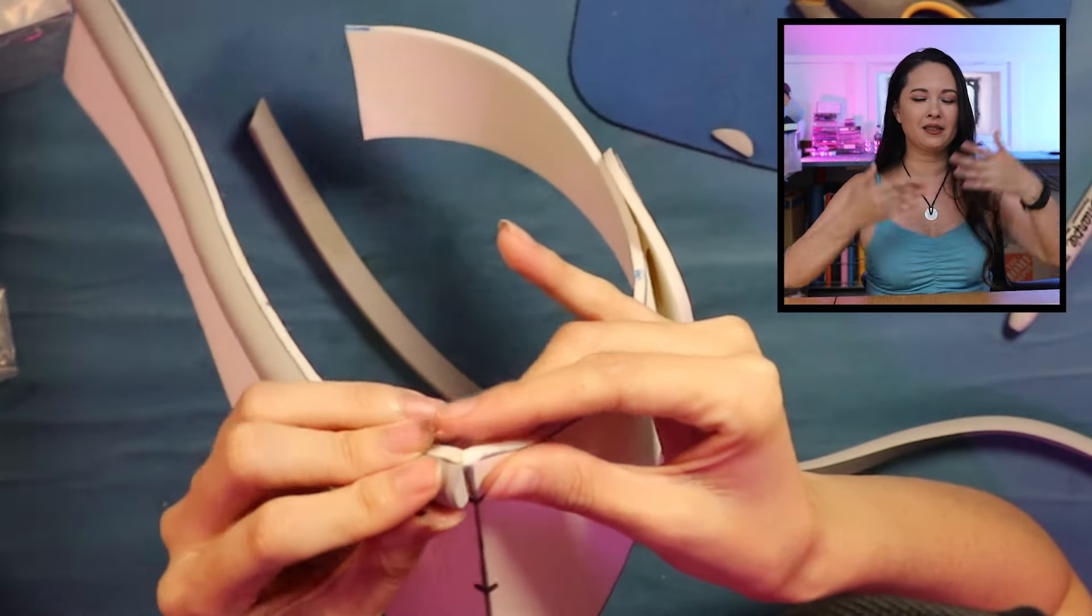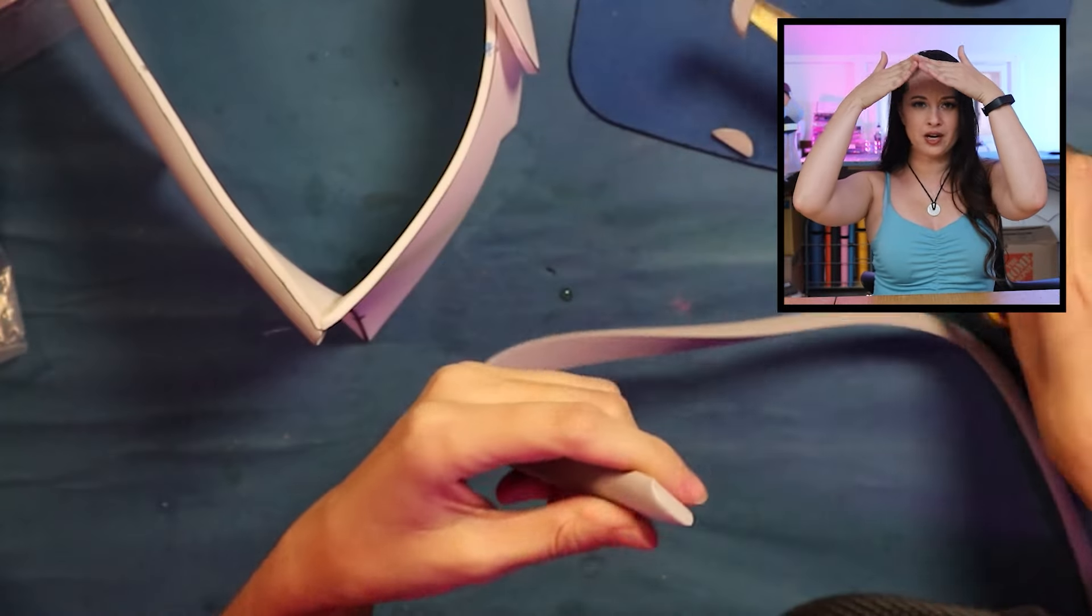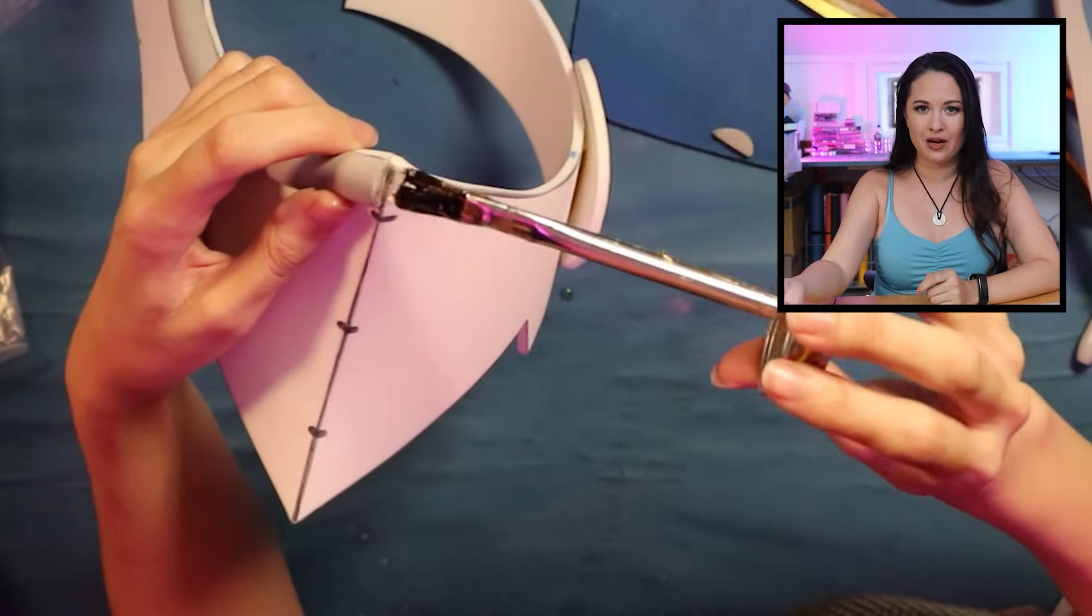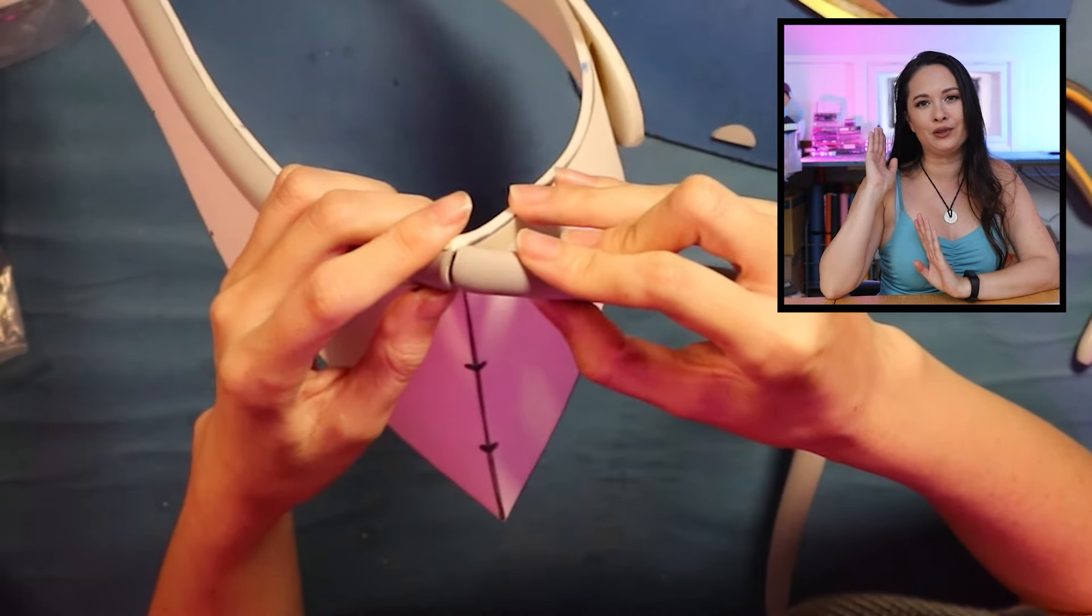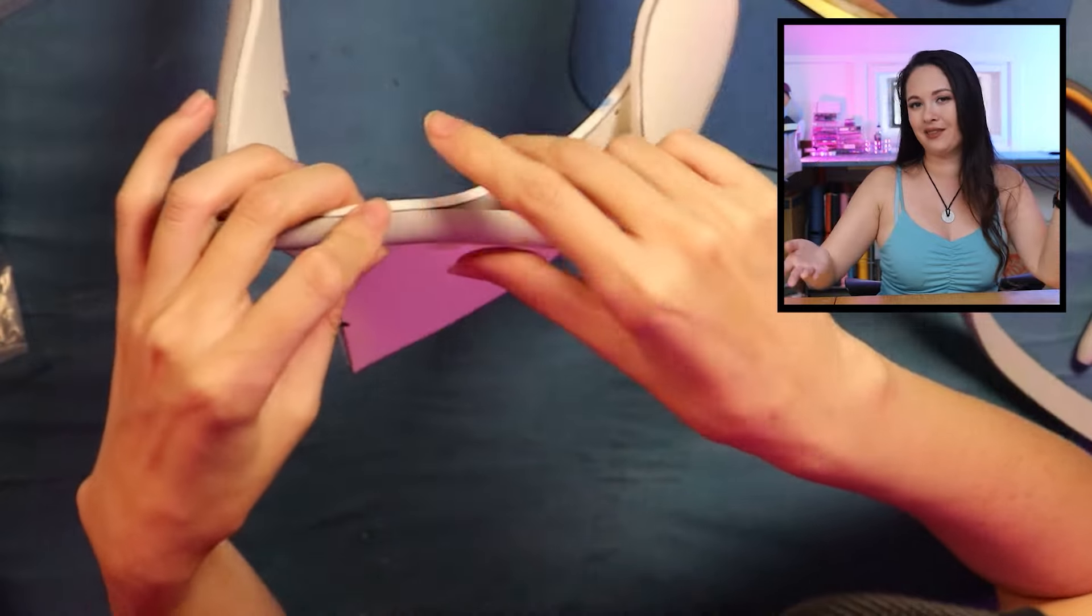The visor has more of a peak to it at the front, so instead of just laying the dowel across the front, I'm going to have it cut into two pieces that meet at a point just like the visor does.